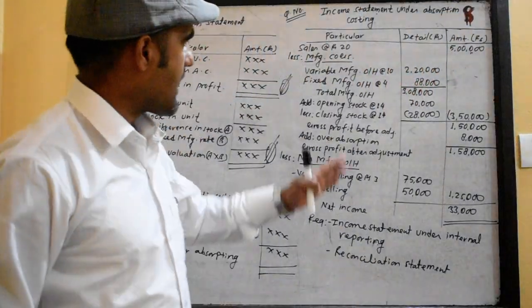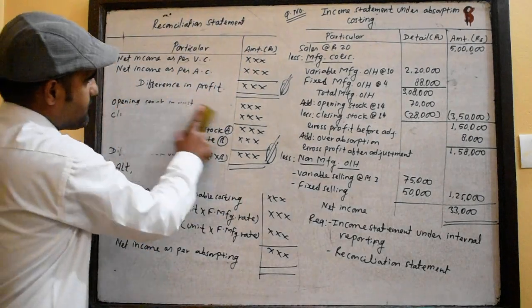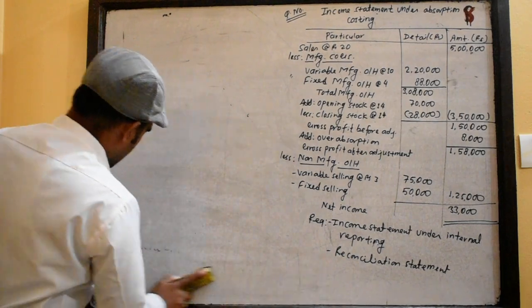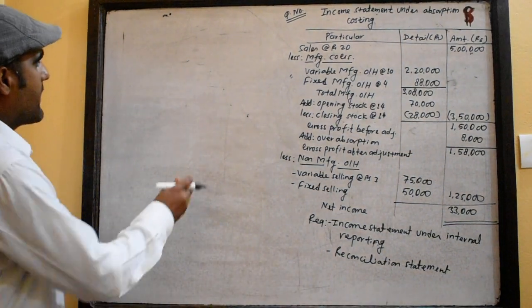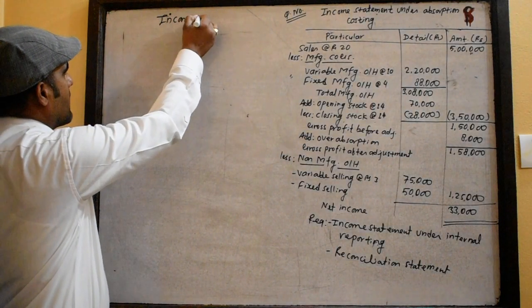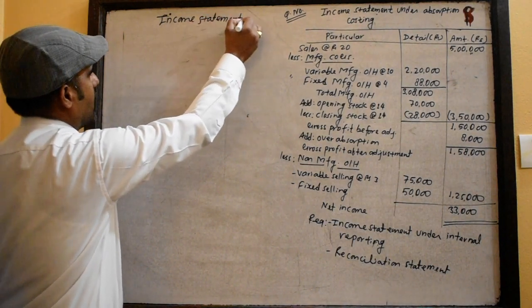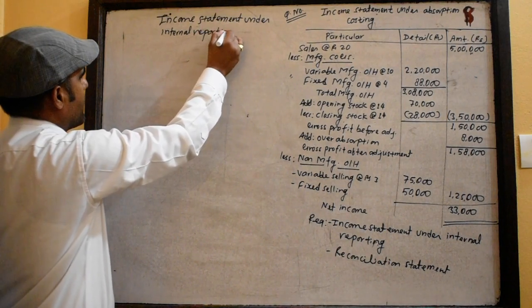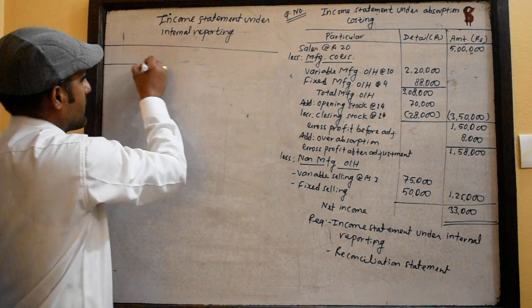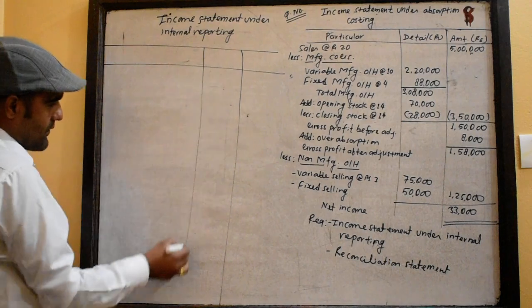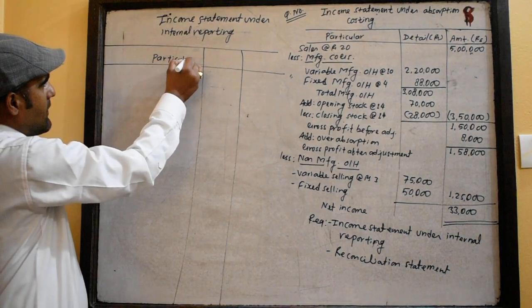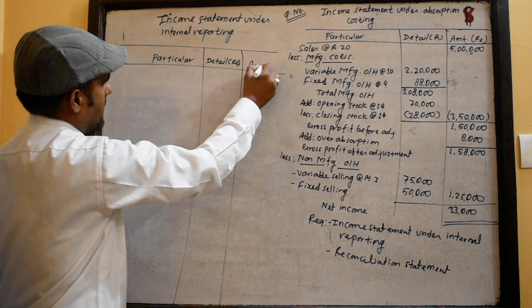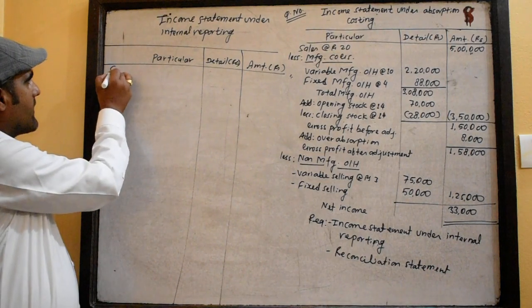This is the example of the variable. Let's start with this. Income statement under a statement under internal reporting.